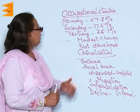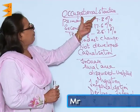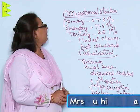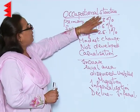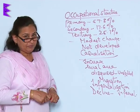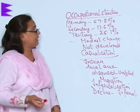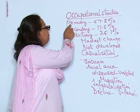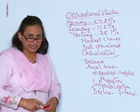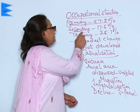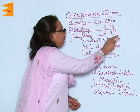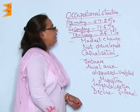Let me talk about the occupational structure of employment in the country. The figures from statistics show that people employed in the primary sector are 57.3 percent, in the secondary sector 17.6 percent, and in the tertiary sector 25.1 percent.